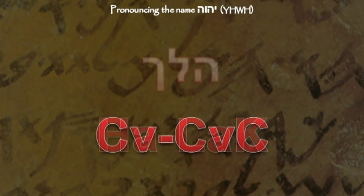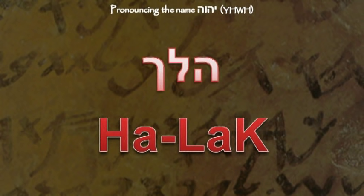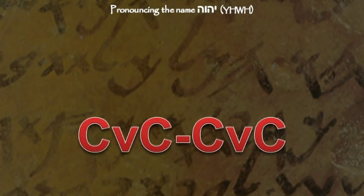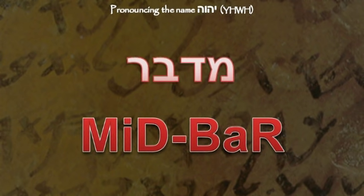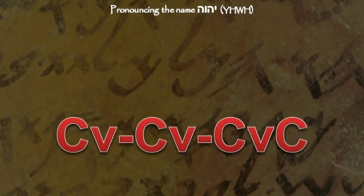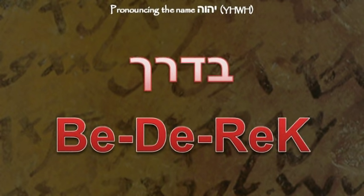An example of this is the Hebrew word pronounced ha-lach, meaning 'walk.' A Hebrew word with four letters will usually be broken up in two ways. The first is consonant-vowel-consonant and consonant-vowel-consonant — an example is mid-bar, meaning 'desert.' The second way is consonant-vowel, consonant-vowel, consonant-vowel-consonant — an example is bederech, meaning 'in the road.'